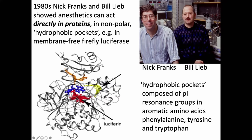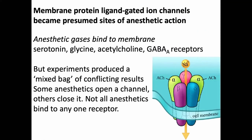They called them hydrophobic pockets composed of pi resonance rings, made up of amino acids phenylalanine, tyrosine, and tryptophan. It was assumed anesthetics act on membrane receptors and ion channels, but after about 20 years of study, no sense could be made of anesthetic effects on membrane proteins — GABA receptors, serotonin, glycine, and acetylcholine receptors all bind anesthetics, but one will open a channel while another anesthetic closes it, and some don't bind all channels. There was no unitary effect, so membrane proteins are not the site of action.